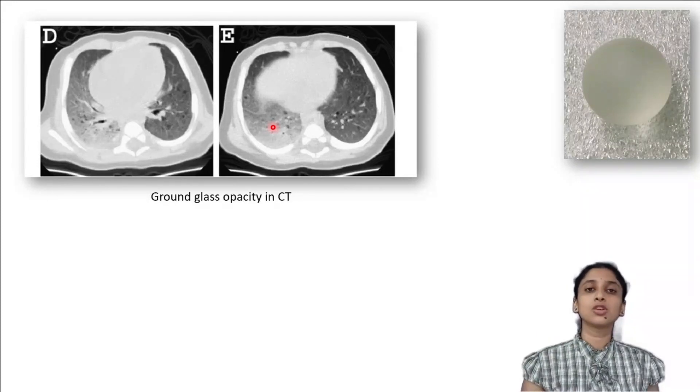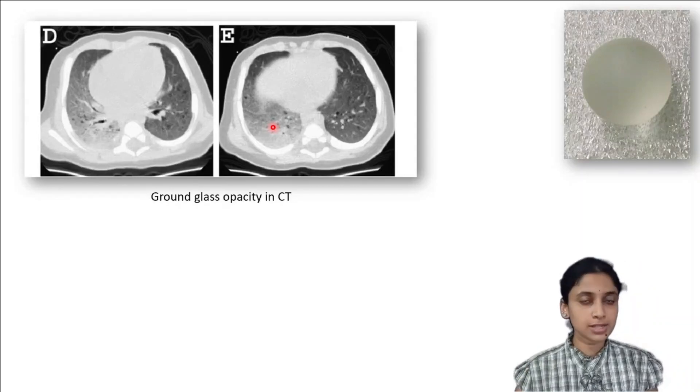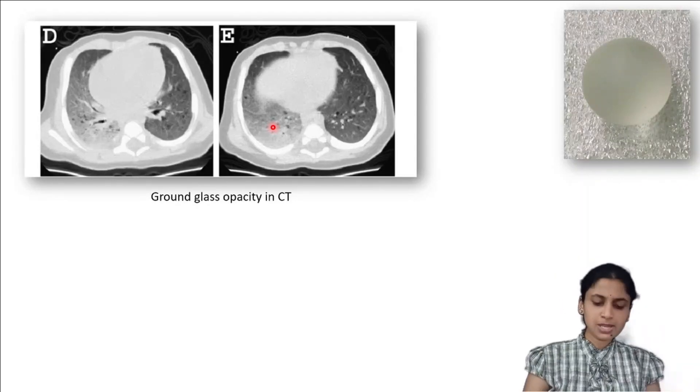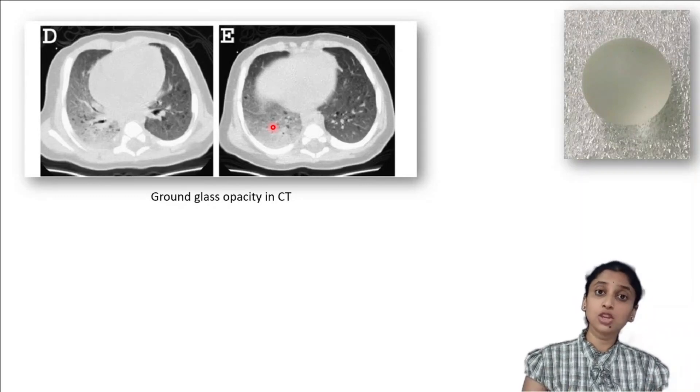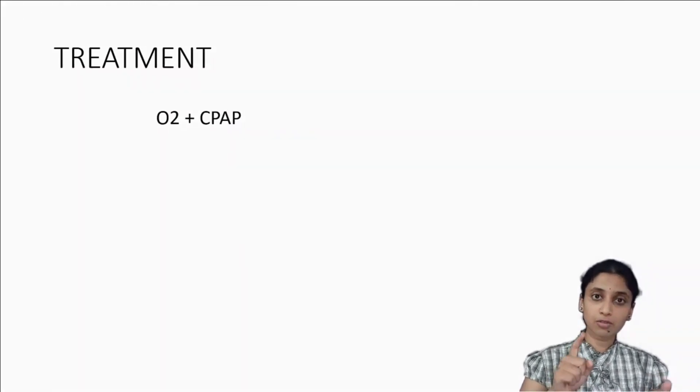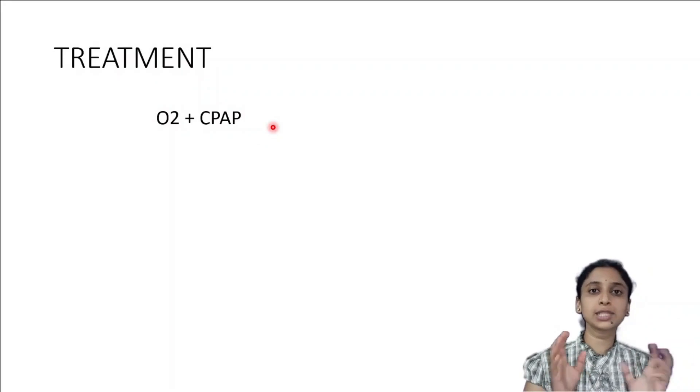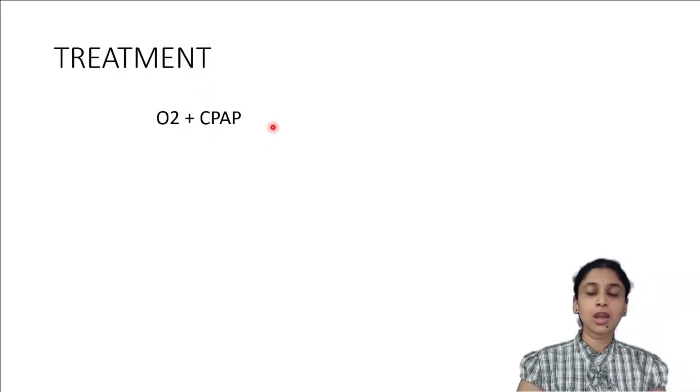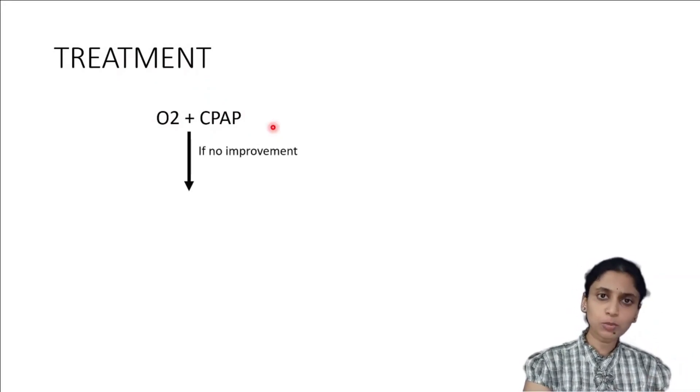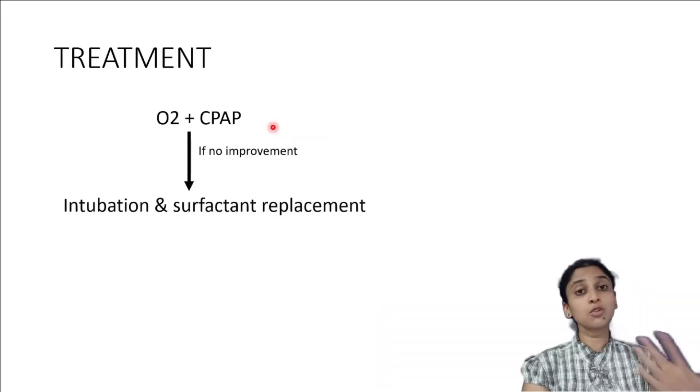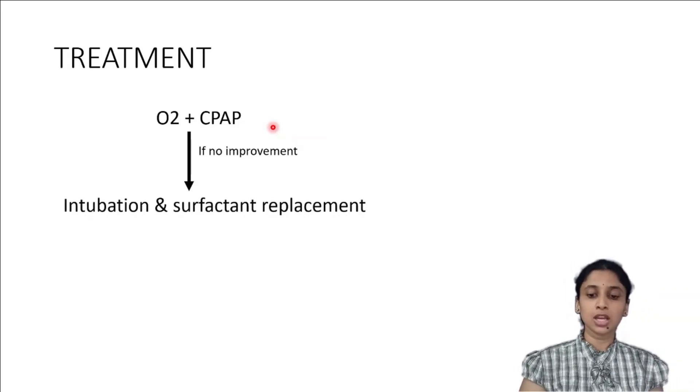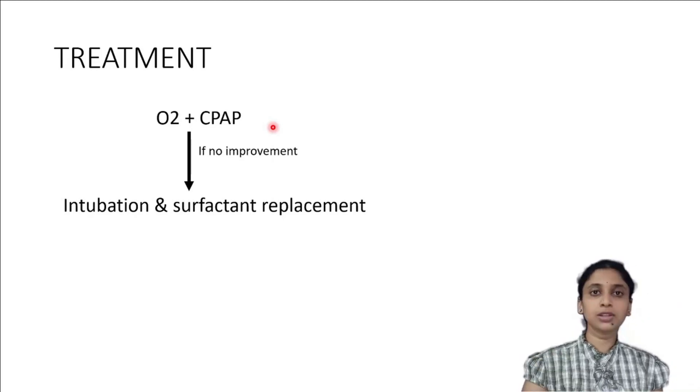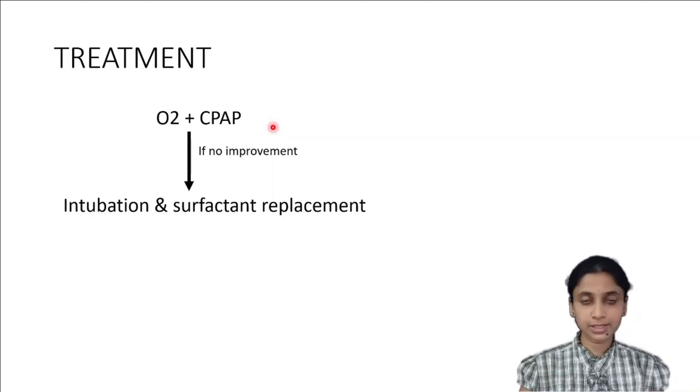Now you have even diagnosed the condition. The next important step would be treatment of this condition. This baby has hypoxemia, hypoxia. What should you give? You have to give oxygen along with continuous positive airway pressure. But if there is no improvement in the condition of the baby, then you have to go for intubation and surfactant replacement. This is how you are going to manage this particular kid with hyaline membrane disease.